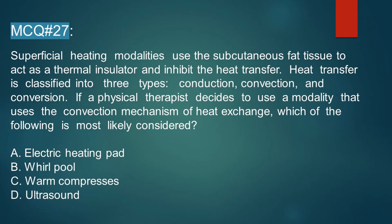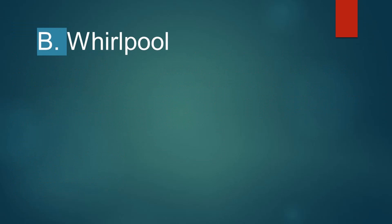If the physical therapist decides to use a modality that uses the convection mechanism of heat exchange, which of the following is most likely considered? Option A: electrical heating pad. Option B: whirlpool. Option C: warm compresses. Option D: ultrasound. The correct option is Option B, whirlpool.